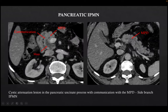This was a case showing a cystic attenuation lesion in the pancreatic uncinate process, seen to communicate with the main pancreatic duct. These findings are suggestive of a side-branch IPMN.